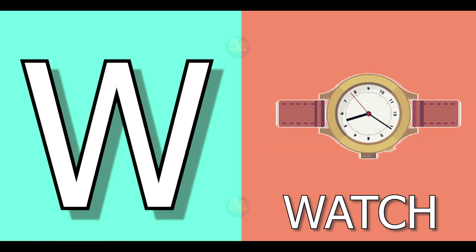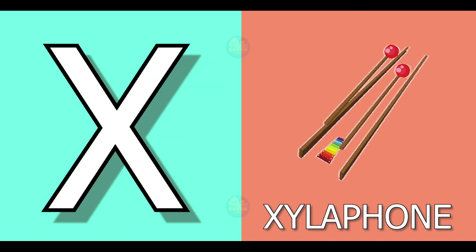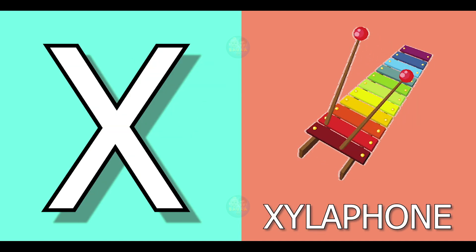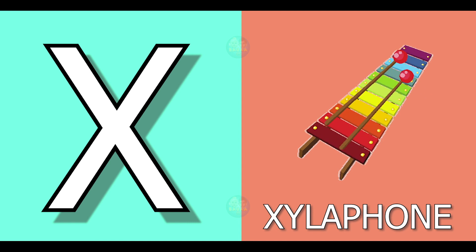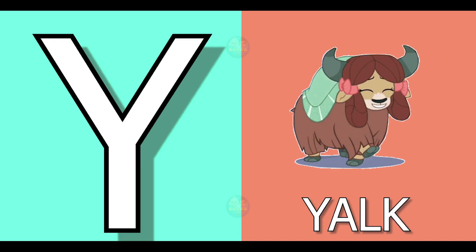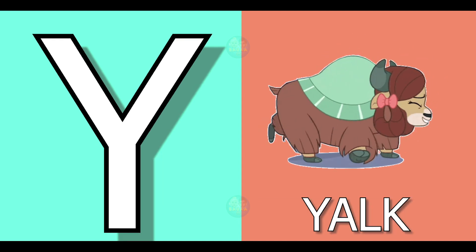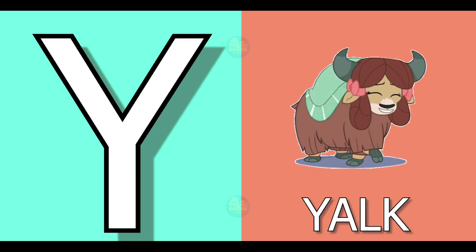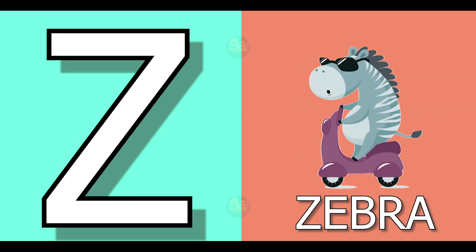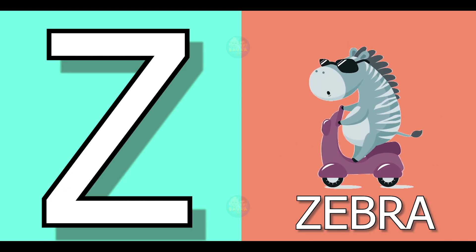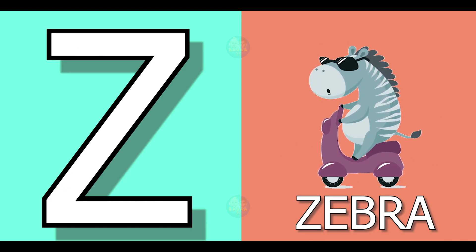W for watch, watch means ghadi. X for xylophone, xylophone means swartarang. Y for yak, yak means yak. Z for zebra, zebra means zebra.